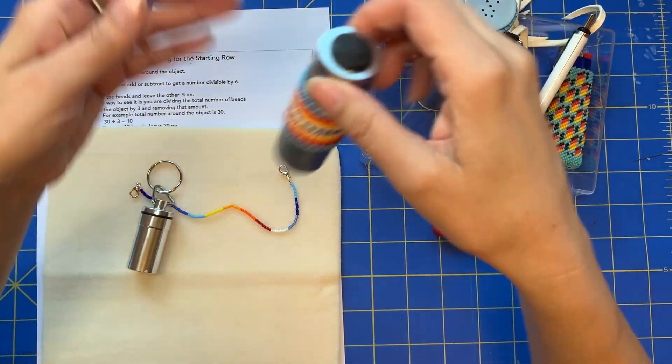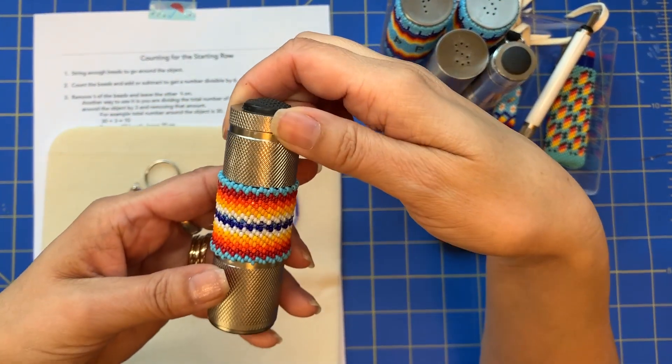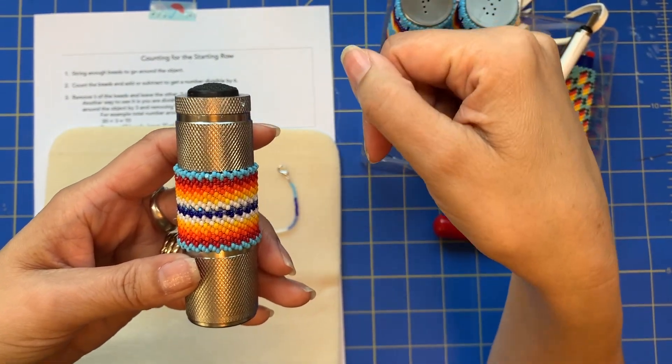Now technically you could do a number divisible by three, but then you're limited in the patterns that you can do.